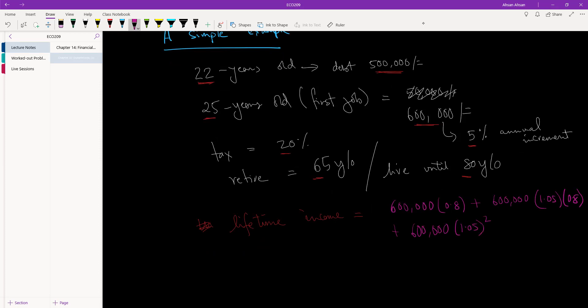because your income has increased twice now. We are in year three, and of course, you pay tax. And this is going to continue, right? This is going to continue until 40 years later, when you're a 65-year-old, your income is $600,000 times 1.05 to the power of 40 times 0.8, which is the tax that you pay.